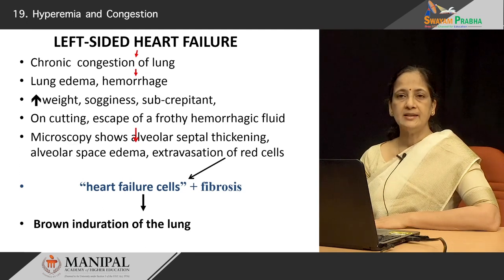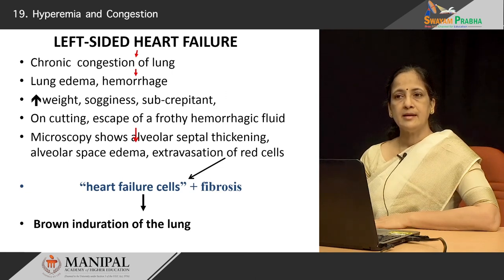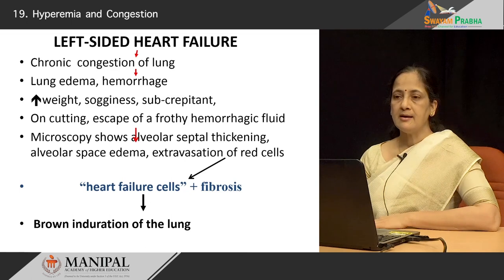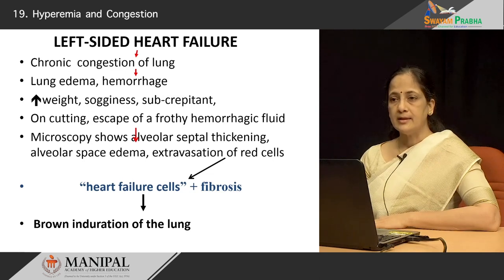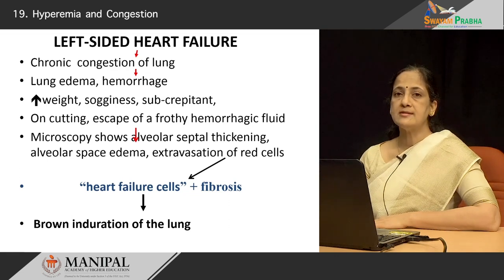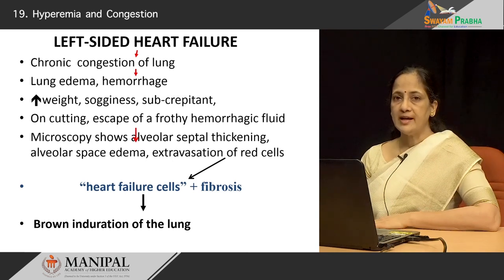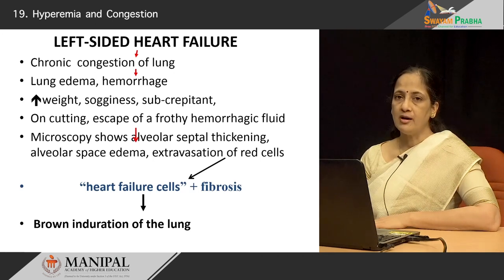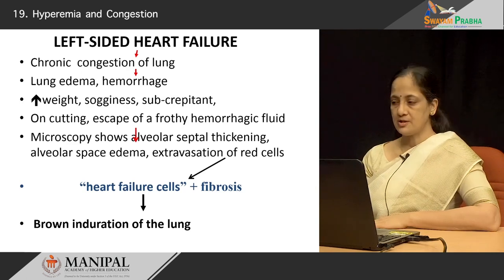Microscopically, we find that the alveolar septae in long-standing chronic venous congestion of the lung become thickened. There is edema in the alveolar space. Extravasation of RBCs from micro-ruptures results in the breakdown of that blood and the formation of heart failure cells — macrophages normally present in the alveoli that take up the haemosiderin golden-brown pigment. With time, fibrosis occurs in the septa and the areas where hemorrhage has occurred, and the lung becomes a firm, brown, heavy organ. This is referred to as brown induration of the lung.